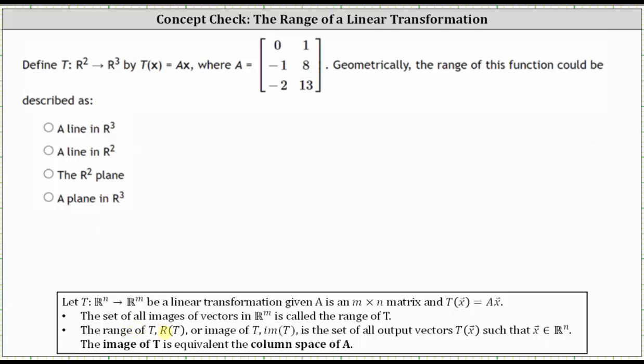The range of the transformation or function is the same as the image of the transformation, which is the set of all possible output vectors T of vector x such that vector x is in Rn. In our case, vector x should be in R2. The image of T, or the range, is equivalent to the column space of matrix A.